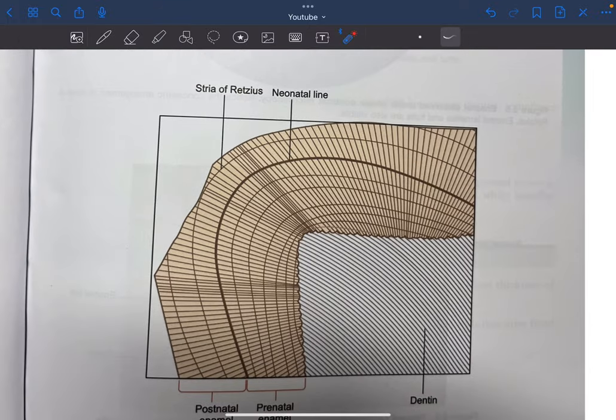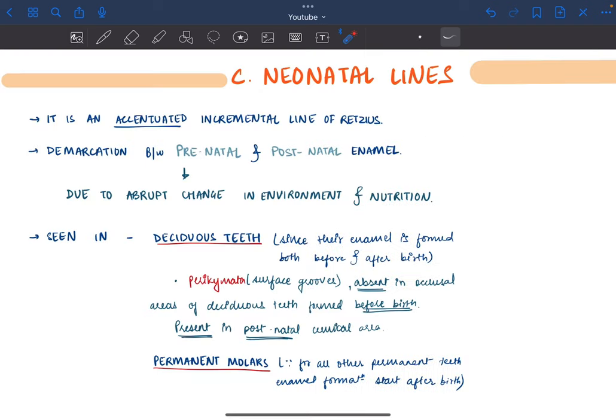This dark line is in a sense also a stria of Retzius, just a little bit more accentuated or dark. The neonatal line represents the prenatal enamel and postnatal enamel, the demarcation between them. Prenatal means before birth and postnatal means after birth.